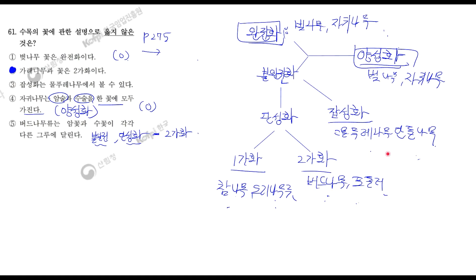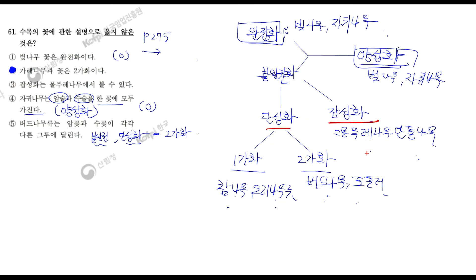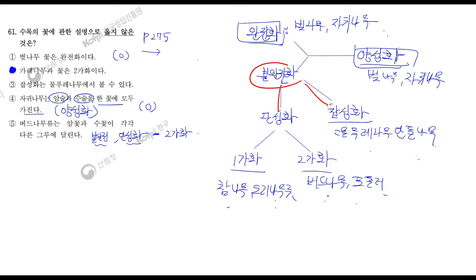1가화에는 참나무류와 오리나무류가 있고요. 단성화는 암수 중 한 가지만 갖는다고 했죠? 그게 버드나무와 자작나무가 있습니다. 버드나무는 2가화도 되고 단성화도 된다는 것이죠. 잡성화에는 물푸레나무, 단풍나무가 있습니다. 이거 같은 경우는 따로 외워두시면 좋을 것 같아요. 그리고 불완전화라고 하는 것은 참나무, 오리나무, 버드나무, 포플러, 물푸레나무, 단풍나무, 자작나무까지 모두 다 들어가게 되겠습니다.